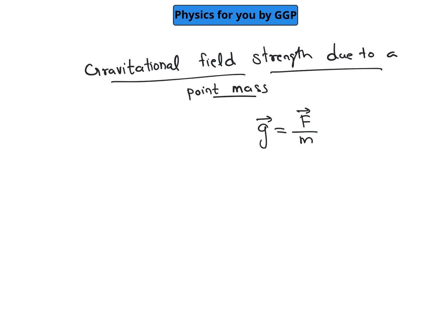Now, we are going to find out the value of gravitational field strength due to a point mass. Assume that we have a point mass, take it as capital M, and our aim is to find out the value of its gravitational field which can exert at a point, take it as P, which is at a distance R from this point mass.